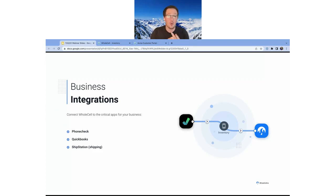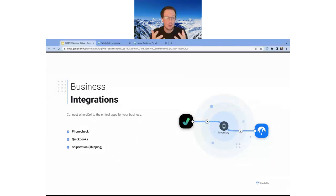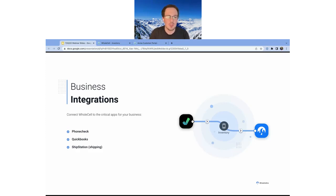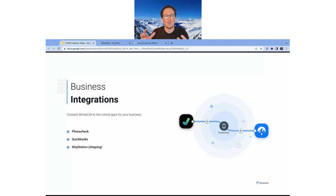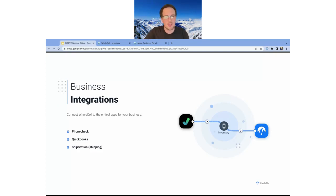We have a QuickBooks integration for syncing invoices and purchase orders, so you don't have to double-enter information. We have a ShipStation integration for shipping — any orders in wholesale can go to ShipStation, and when you print a label there, the tracking information comes back to wholesale, which then sends it to your e-commerce channels. It's a full-cycle integration pool that gets your inventory information into wholesale and from wholesale out to your sales channels.